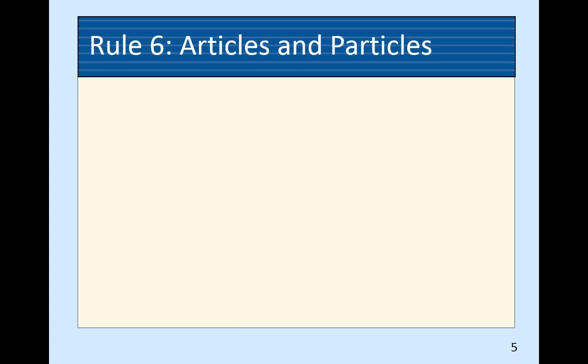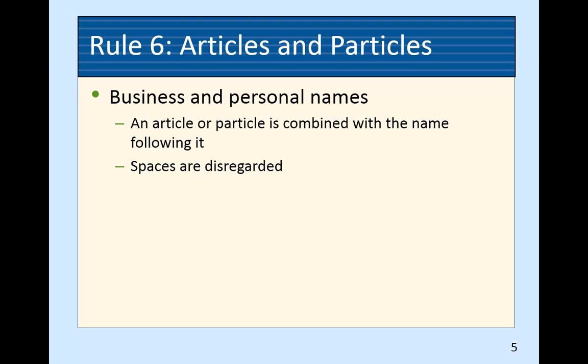Rule 6 talks about articles and particles. What did we already learn in Rule 2? Articles — what are articles? The, a, and an. Those three words are articles. Well, we've got some more things to say about it now. We've been telling you that every word is its own indexing unit, but now we're going to say — wait a second — some things don't get separated.